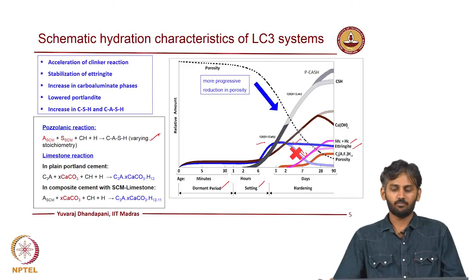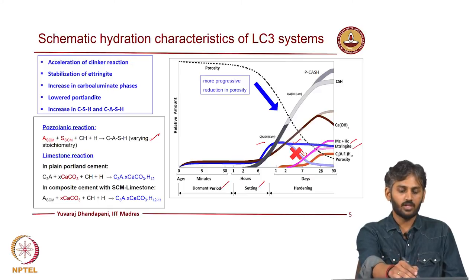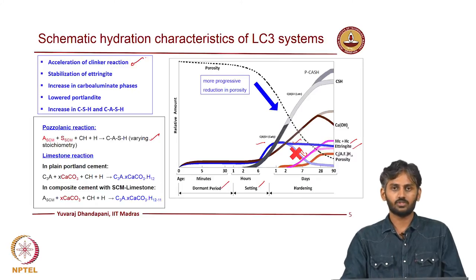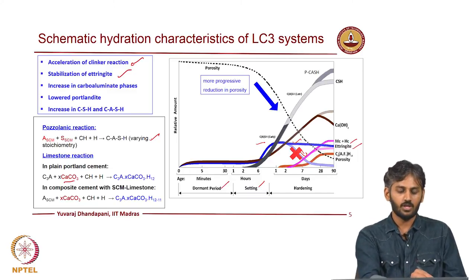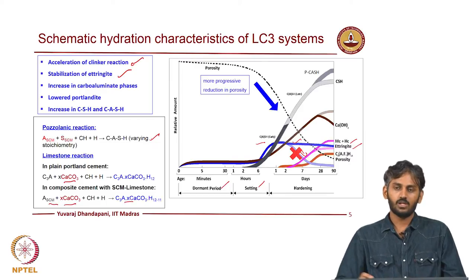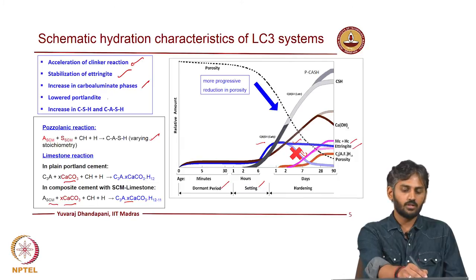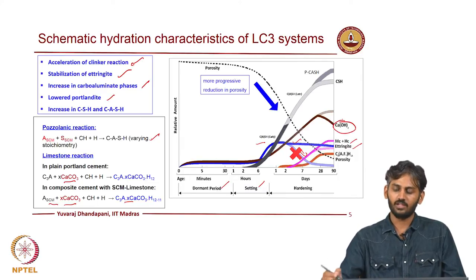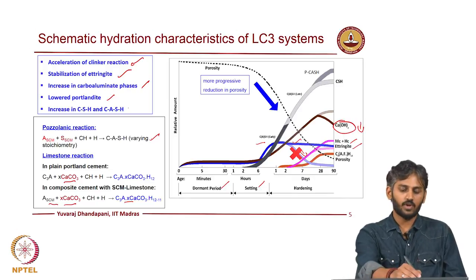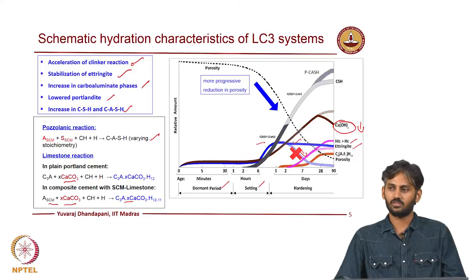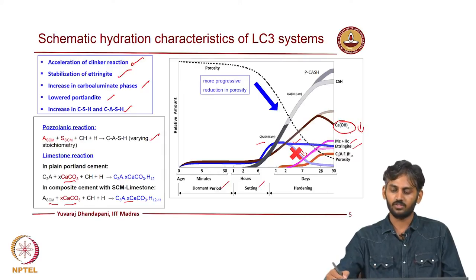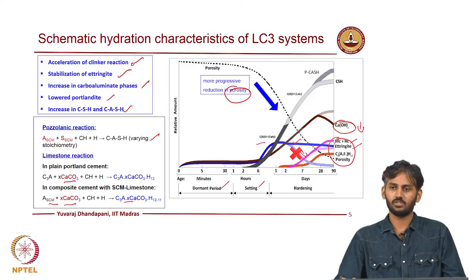When you have calcite particles in the system, the ettringite initially formed is sustained. This is because calcite particles react with excess aluminates and form additional hydration products called mono and hemi carboaluminates, along with a traditional pozzolanic reaction from calcined clay — which occurs in most blended cements. When multiple reactions happen in parallel — acceleration of clinker reaction due to limestone, stabilization of ettringite via calcite reacting with alumina to form carboaluminates — you do not necessarily convert ettringite to monosulfate. Portlandite amount tends to get lowered, and there is an increase in pozzolanic C-S-H and C-A-S-H.